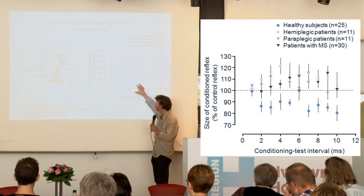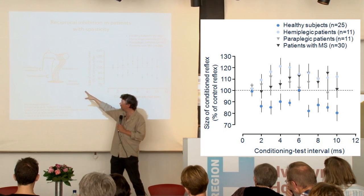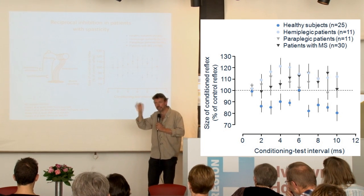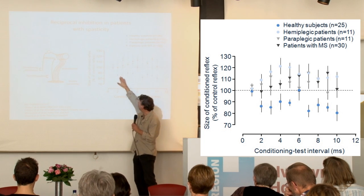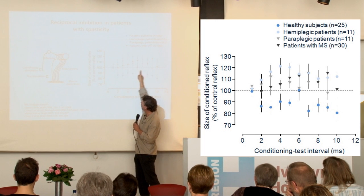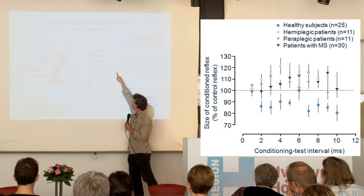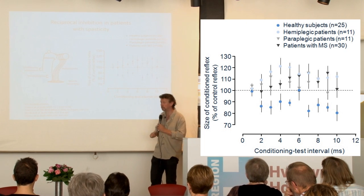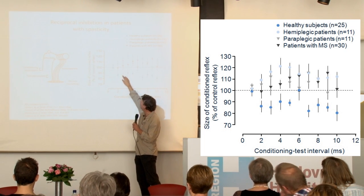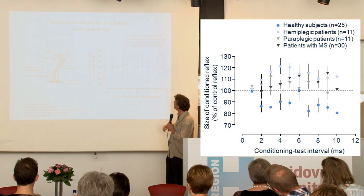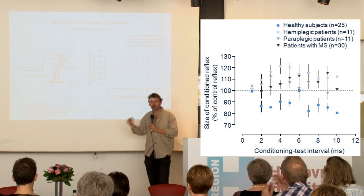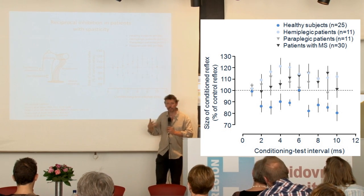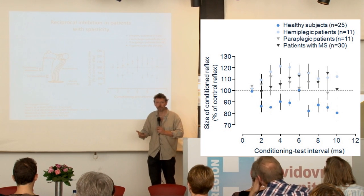So how does that look in patients? This is the way we can test it: we can evoke a stretch reflex electrically using the so-called H reflex, and then we can stimulate the antagonist nerve and activate this reciprocal inhibition between the two muscles. In healthy subjects, 100 is when there's no change in the reflex; whenever it goes below that, it means we can inhibit the reflex from the antagonist. You can then see what it looks like in hemiplegic patients, paraplegic patients, and patients with multiple sclerosis — basically, it's gone. And in many of them, it's being replaced by a facilitation, so they definitely have a problem with reciprocal inhibition.